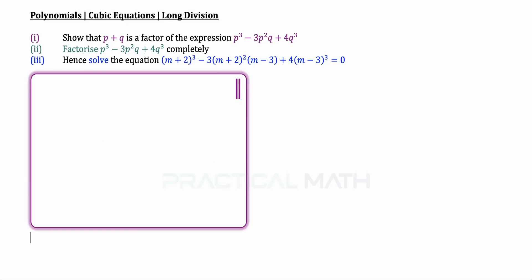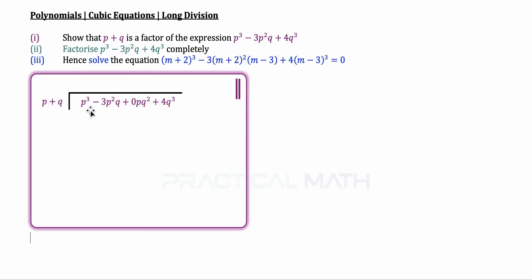First, we write our cubic expression in the dividend. Notice that for our cubic expression I've inserted a new term, which is 0pq squared. This is absolutely necessary to avoid careless mistakes. We have p to the power of 3, p squared, but we are missing p to the power of 1, going straight to the last term. Similarly, we have q to the power of 0, q to the power of 1, but we are missing q squared, going straight to q cubed. So inserting this term is necessary.